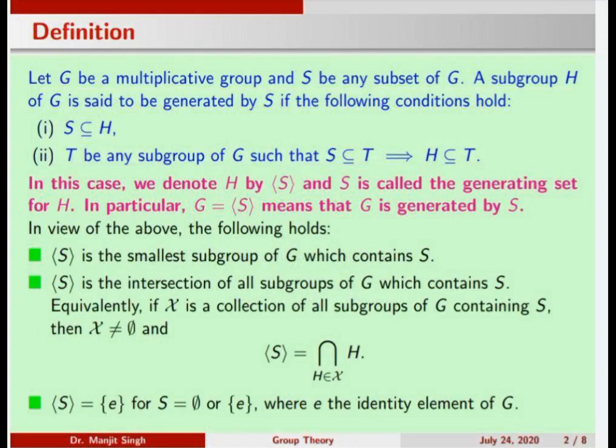We give the definition of a subgroup generated by a subset. A subgroup H of a group G is said to be generated by a subset S if S is contained in H, and if there is any other subgroup of G which contains S, it implies H is contained in that subgroup. We use the notation shown here in magenta color.